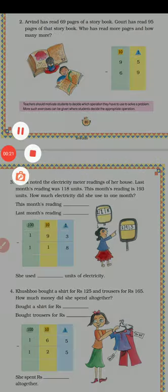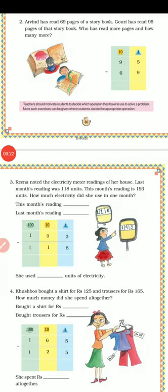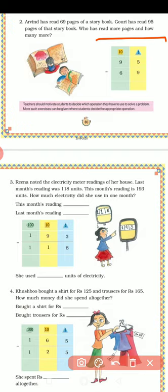So what is written? Arvind has read 69 pages of a storybook. Gauri has read 95 pages of that storybook. Who has read more pages and how many more? Arvind has read 69 pages and Gauri has 95 pages. We are asking who has read more and how many more.